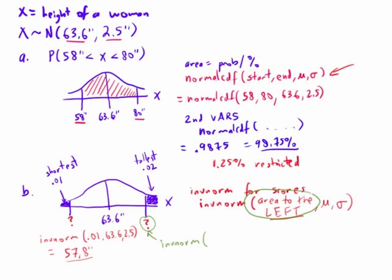but we need to put in the area to the left. So one of the biggest mistakes that people make is to just put in 0.02 here. It's going to give us a completely wrong number.